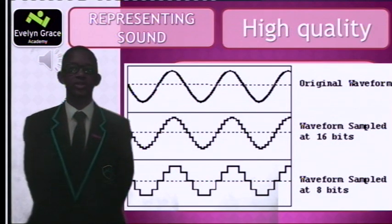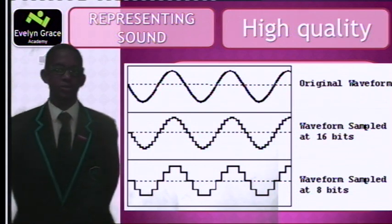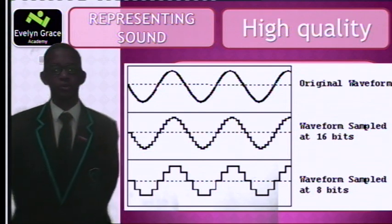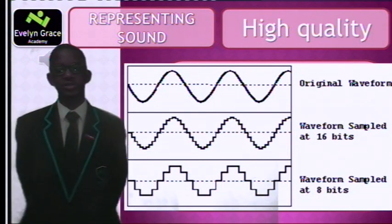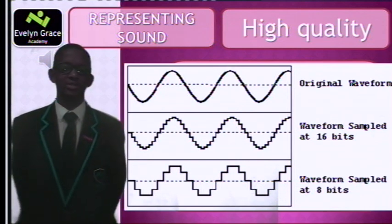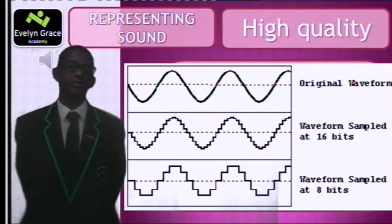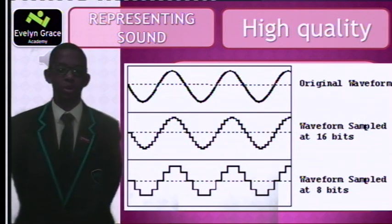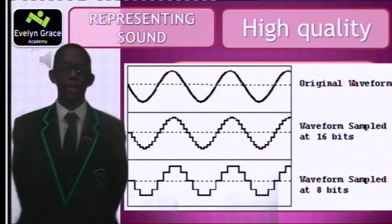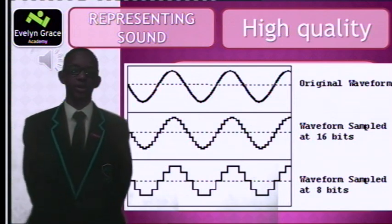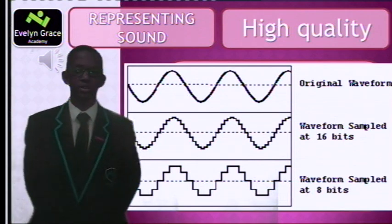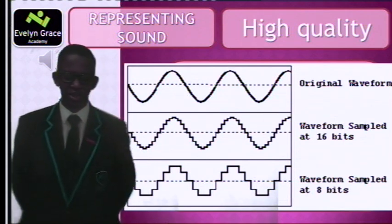As you can see, this is a sound wave. The second and the third one have been converted into a digital form. The middle one was converted at 16 bits. This means that it will take up more space as there are more bits used. However, the quality of the sound will be much greater than the third one. This is because the third one is measured at 8 bits, meaning it is not measuring as much detail — just little bits. However, it will take up less space on your hard drive.